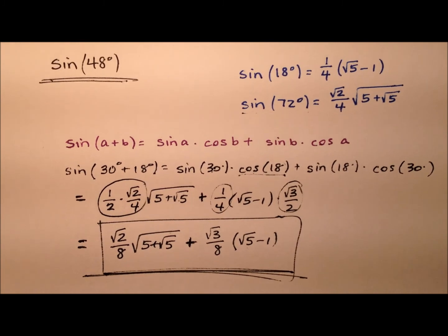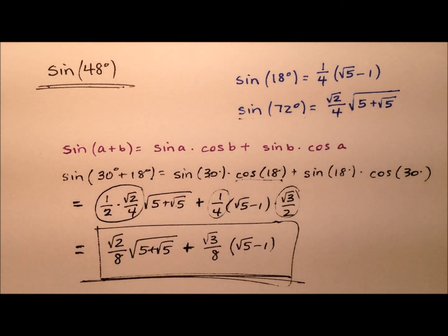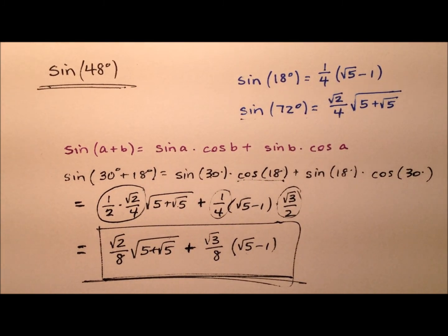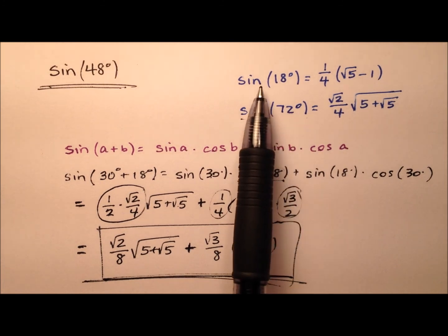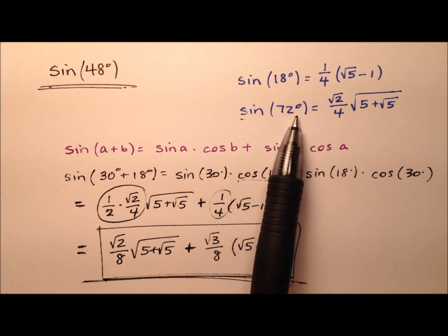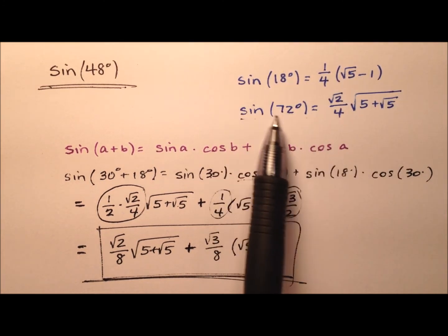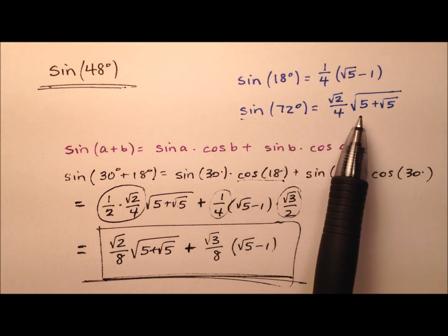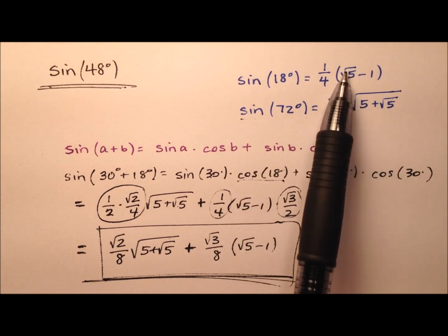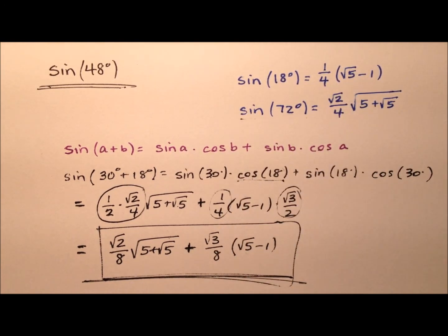Again, we got that value by using the sum identity for sine, and also included the sine of 18 degrees and the sine of 72 degrees, both of which I found from scratch in other videos. Those videos are linked down in the description for this video.